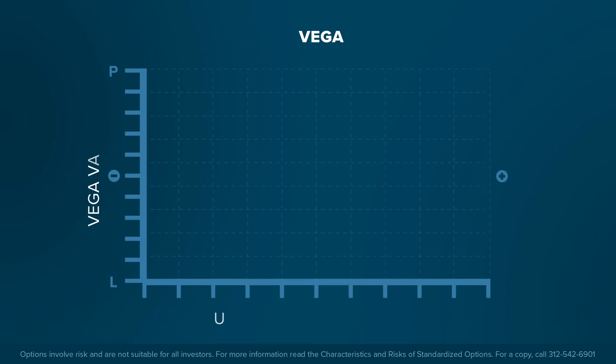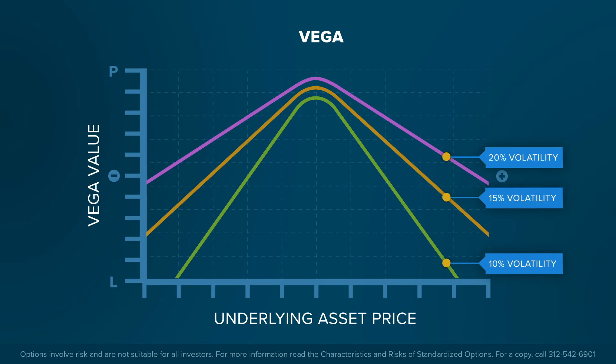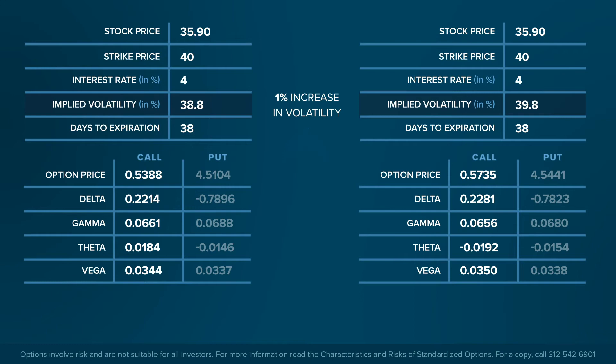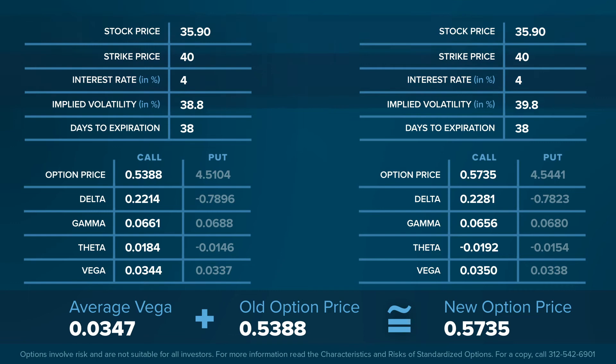Vega represents the change in the option's price due to a change in its implied volatility. Vega is always greatest for an at-the-money option and decreases as the underlying asset price moves increasingly into the money or out of the money. An increase in volatility of 1% will change the option's price by approximately the average of the Vega. Change the model inputs on the options calculator and click Calculate to better understand the impact on Vega.